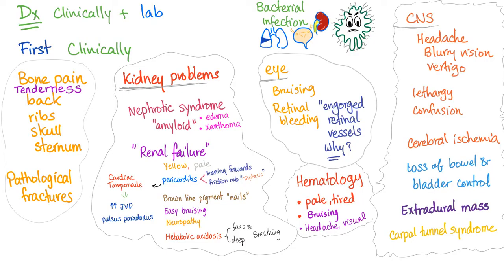Hematologically, the patient is pale and tired due to anemia. Bruising occurs because platelets cannot adhere to the endothelium due to amyloidosis, and the M component also interferes with platelet aggregation and activation. Headache and visual disturbances occur because of hyperviscosity — CNS findings include blurry vision and vertigo due to hyperviscosity, and lethargy and confusion due to hypercalcemia.